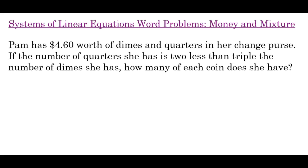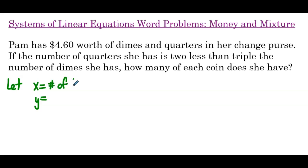So we need to start by defining our variables. We're going to use two variables, so we need to define x and y. The number of quarters is defined in terms of the number of dimes, so let's let x be the number of dimes, and y is the number of quarters. We could easily switch this up and it won't have any effect on our problem.